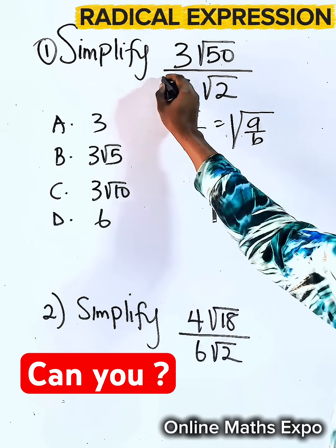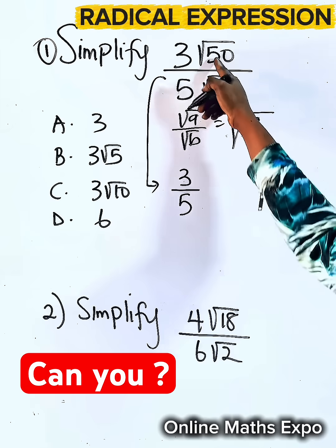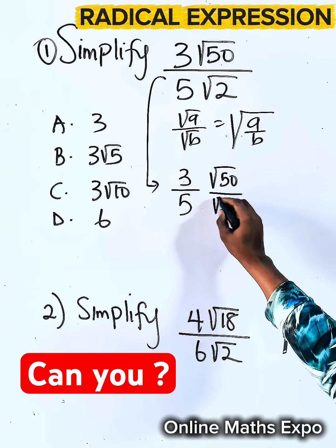So to answer this, we are going to now have this is 3 divided by 5, then for this you have root of 50 divided by root of 2.